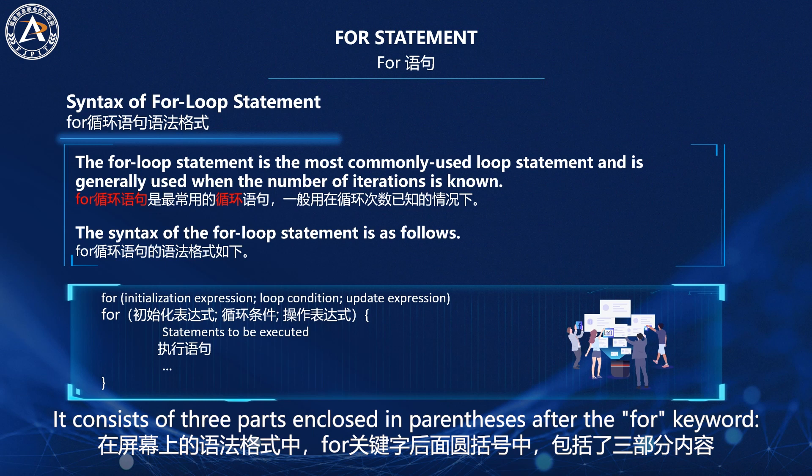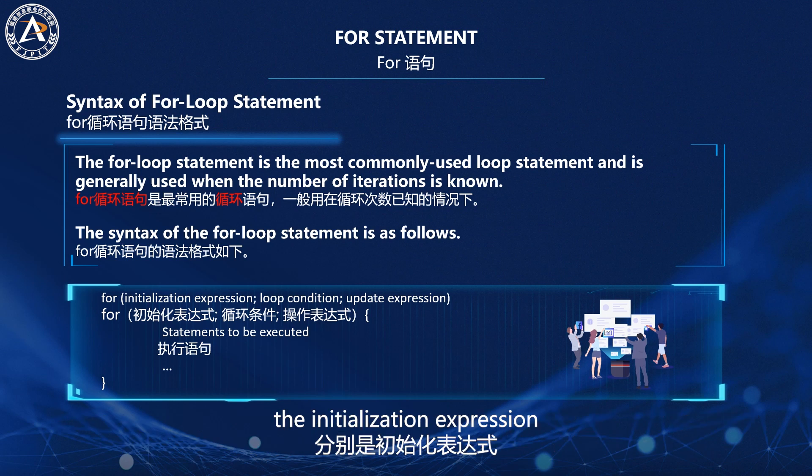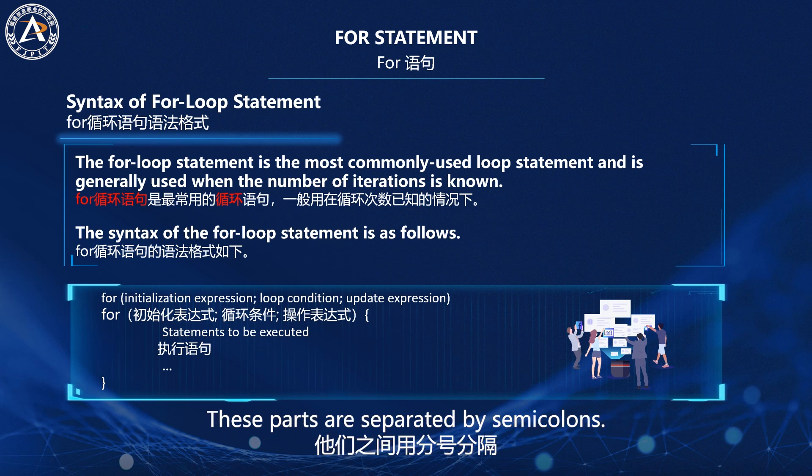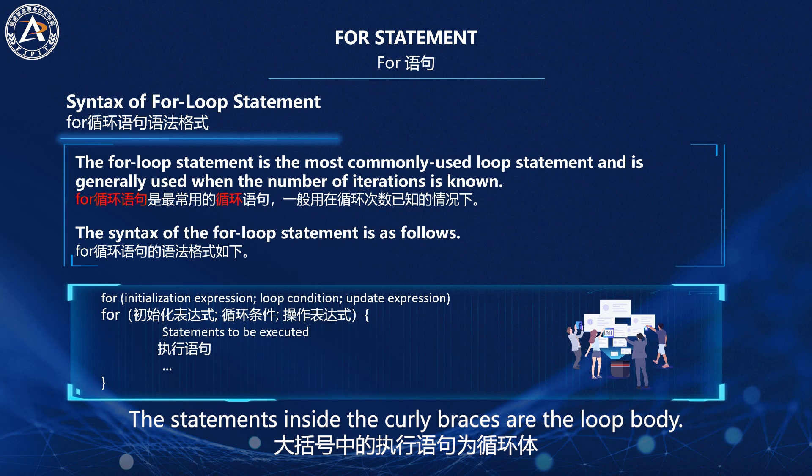It consists of three parts enclosed in parentheses after the for keyword: the initialization expression, the loop condition, and the update expression. These parts are separated by semicolons. The statements inside the curly braces are the loop body.